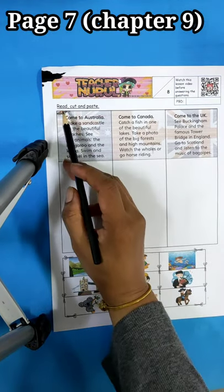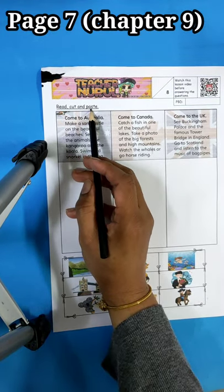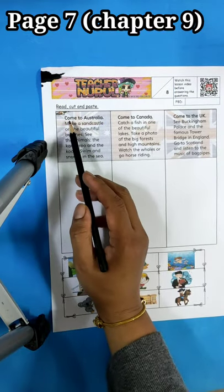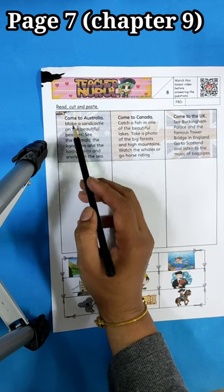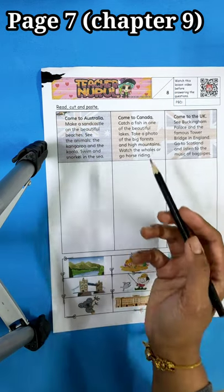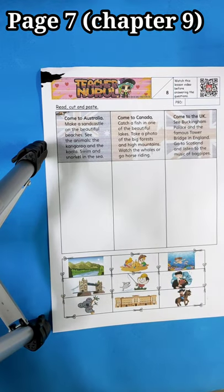Page 7. Read, cut, and paste. Let us read the sentence first. Come to Australia. Make a sand castle on the beautiful beaches. Remember when you are reading,